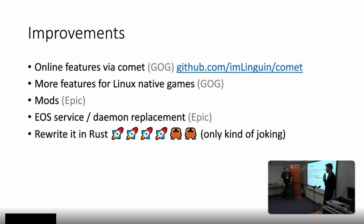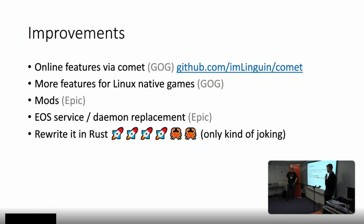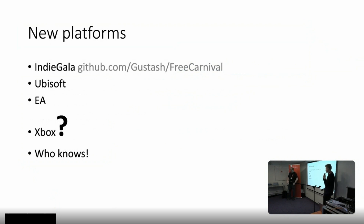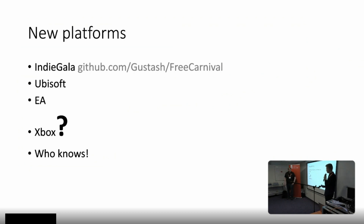Also in the plans: mods for Epic - not that important at the moment, but something to keep in mind. EOS service daemon replacement for that weird Node.js thing Denis mentioned. And rewriting everything in Rust - that's only a joke. We also want to support new platforms. There's IndieGala, which is currently working, written in Rust, a CLI application. It's in really early stages, but you can already use it and download games, and it's already faster than the official client - which is interesting, since the official client's limitation is that it's completely written in Node and doesn't have multi-threading for downloading.